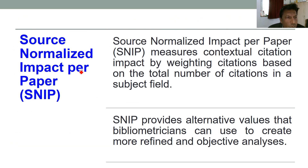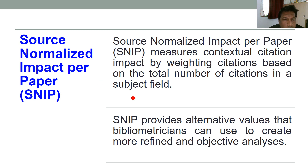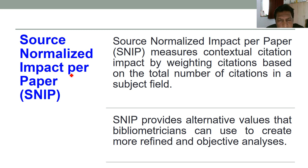Now, what is source normalized impact per paper? While calculating source normalized impact per paper, only contextual citations are considered — citations in a subject field specific to that subject. Only those subject-specific citations are counted. Many times papers not relevant to your topic are still added in your introduction and reference list when publishing a paper. So if any citation is not of that subject, those citations are excluded, and only subject-specific citations are considered to calculate the source normalized impact per paper, called SNIP.